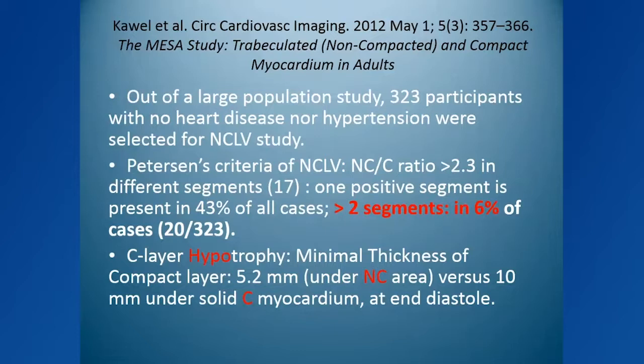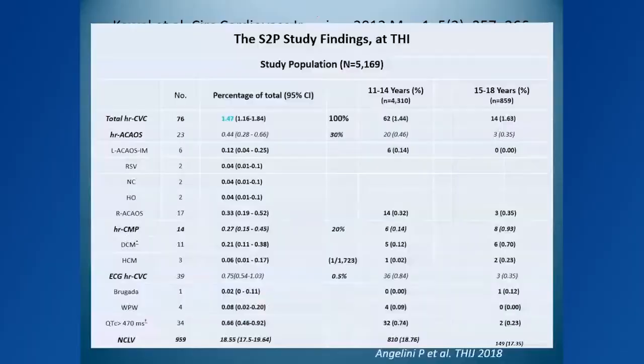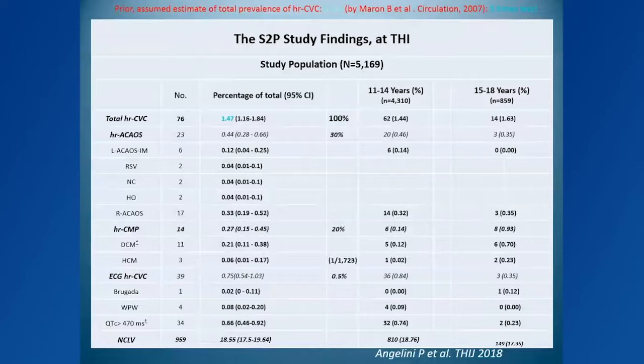The compact myocardium beneath non-compaction is basically half the normal thickness compared to other segments of the heart. This is something that could eventually lead to cardiomyopathy by hypoplasia of the compact functioning myocardium — and this is pretty much the conclusion of our study.